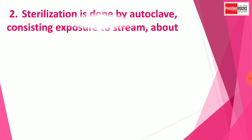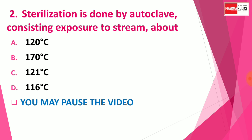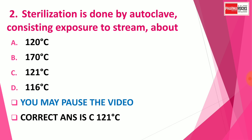Question number 2. Sterilization is done by autoclave consisting of exposure to steam at — Option A: 120°C, Option B: 170°C, Option C: 121°C, and Option D: 160°C. You may pause the video to think about the correct answer. The correct answer is Option C, 121°C. Sterilization is done by autoclave at the temperature of 121 degrees Celsius.